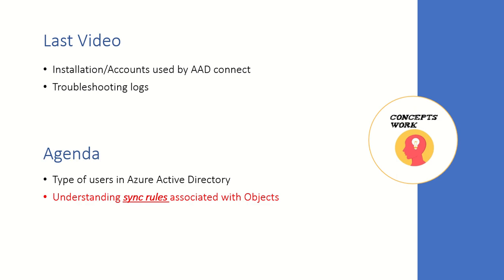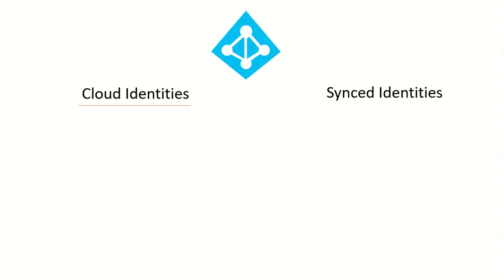The scope of this video will be knowing the types of users in Azure Active Directory and understanding the theoretical part related to sync rules — what the different types of sync rules are that get created, what is the purpose of an inbound rule, and what is the purpose of an outbound rule.